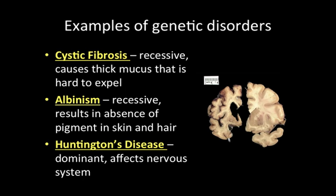Some examples of genetic disorders: we have cystic fibrosis, which is a very common genetic disorder. It is recessive and causes mucus to be really thick, making it very hard to expel. The mucus gets clogged in the lungs and causes a lot of respiratory problems. Albinism is recessive as well, and results in the absence of pigment in skin and hair, which can cause some significant problems later on. Many genetic disorders cause other problems not necessarily related to the disorder, and some result in a shortened lifespan, like cystic fibrosis. Huntington's disease is a dominant disorder that affects the nervous system — you can see how it significantly affects brain function and can lead to early death.